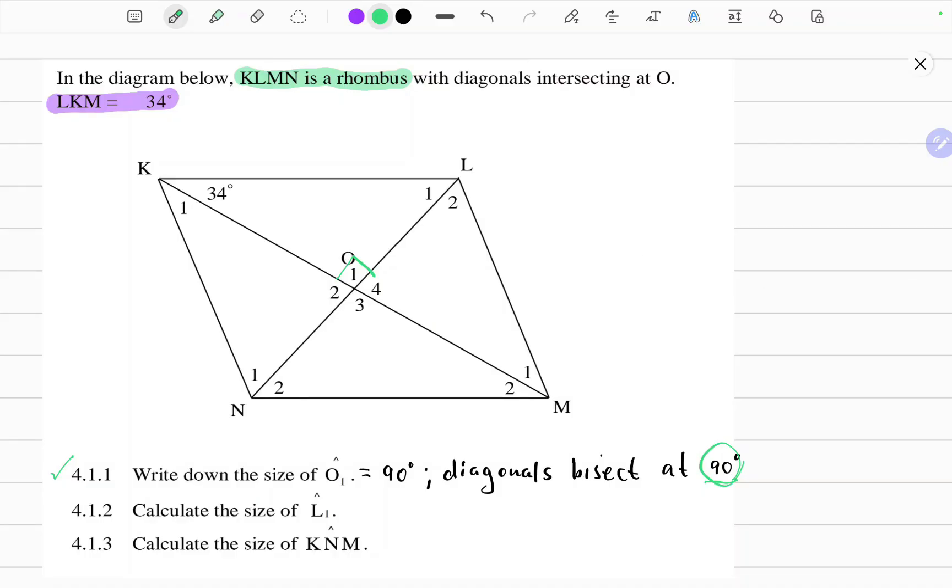The second question, calculate the size of L1. By inspection we can see that K, O, and L form a triangle and we know that interior angles of a triangle add up to 180 degrees. We're given this angle, we're given that angle, we can find this angle.